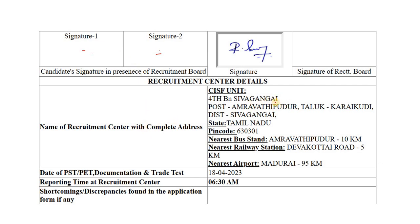You can see the selection section on CSF. The 4th Battalion is on CSF. The ITPP is on CSF, on the same side as you know. You can see the complete address, the nearest bus stop, the nearest railway station, and the nearest airport. You can see the bus or train options.